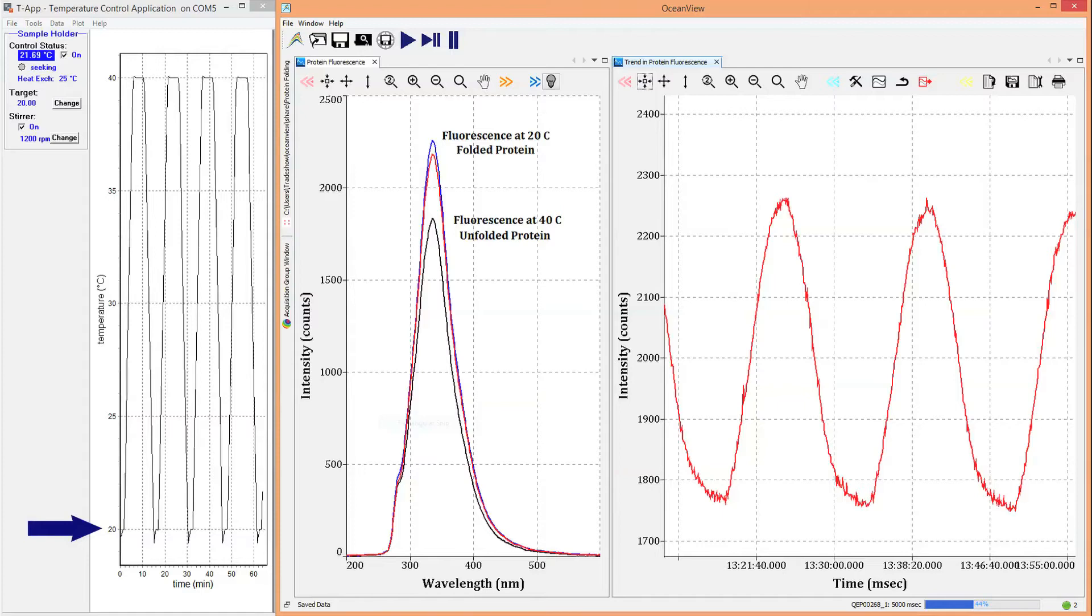At 20 degrees Celsius, the protein is in its fully folded state, and we see the highest fluorescence intensity levels. As we increase the temperature to 40 degrees Celsius, the protein begins to unfold, or denature, and the fluorescence decreases.